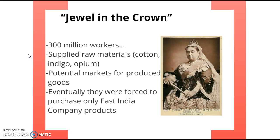They also had indigo, a purplish dye gotten from that plant, and they had opium — a super highly addictive drug that heroin is made from. But cotton was really the huge one; everyone wants it for clothes. Those other two were big money makers as well.